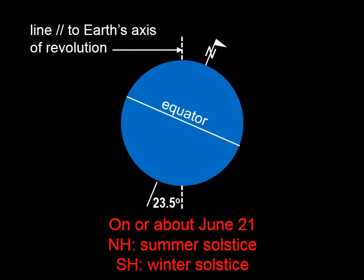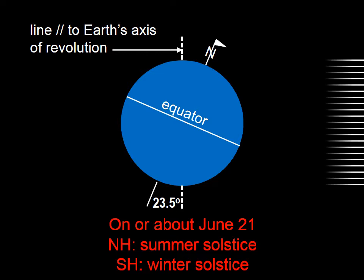Let's talk about the seasons for a moment. Here we have a model of the Earth. Here's the North Pole, there's the South Pole. It turns out that the line parallel to Earth's axis of revolution does not coincide with the Earth's axis — there is a 23 and a half degree difference. So, if we take the case on or about June 21st, which in the Northern Hemisphere we call the Summer Solstice, and in the Southern Hemisphere it's called the Winter Solstice, this is the day in the Northern Hemisphere of longest sunlight.